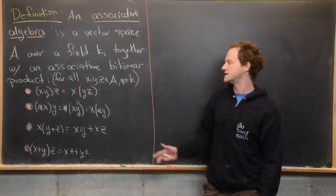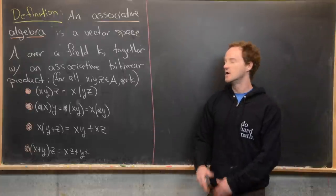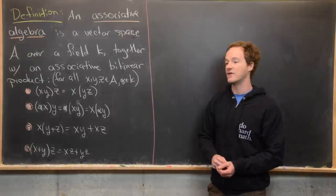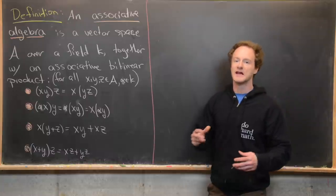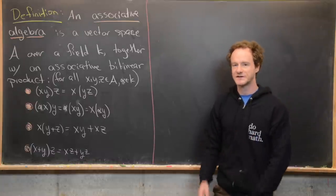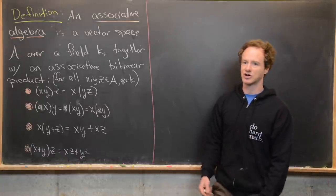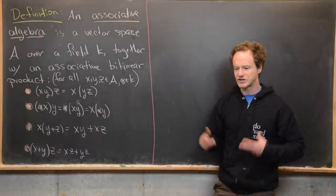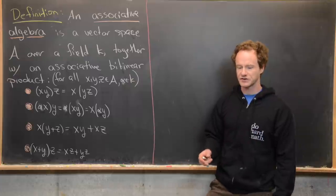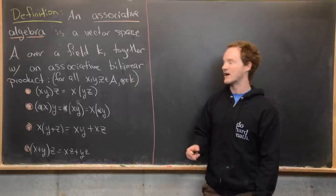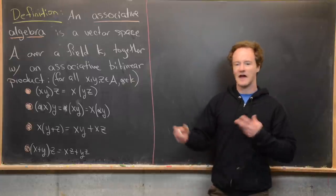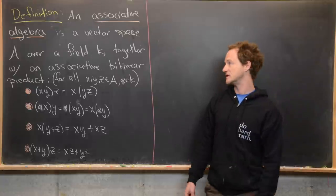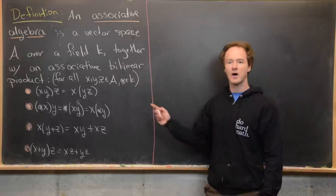What you'll notice is that this is pretty close to the definition of a ring — it's just a ring with some extra structure. In fact it's really just a ring with the structure of a vector space, with extra rules to go along with the operations in that ring.